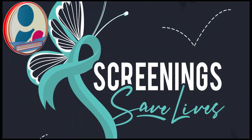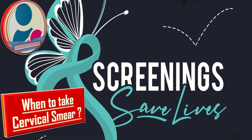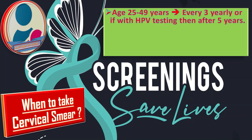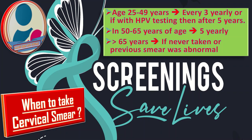When to take the cervical smear? In sexually active women of 24 to 49 years, the pap smear is done after every three years, or if with HPV testing then after 5 years. In 50 to 65 years of age, it is done 5 yearly. When the age is more than 65 years, we do not take the pap smear, unless it was never taken or the previous smear was abnormal.